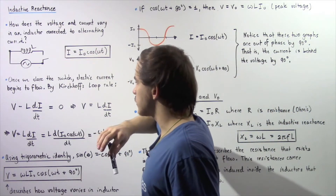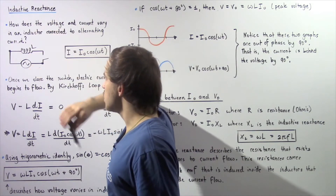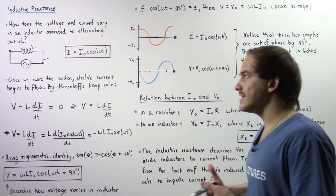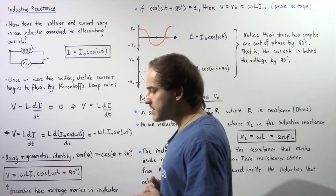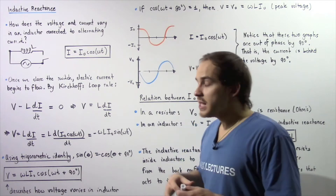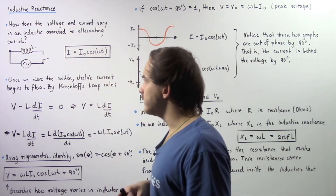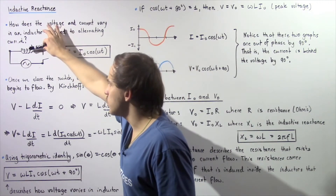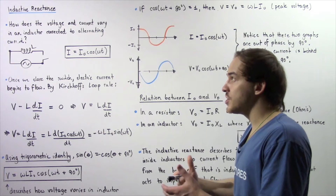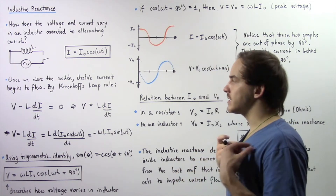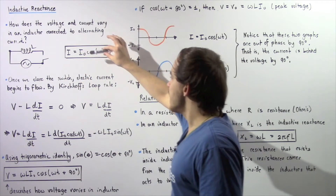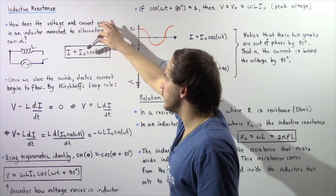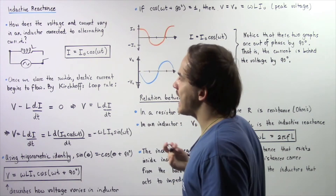Let's suppose we have an electric circuit in which we have an inductance L that is connected to an AC source — a voltage source that creates an alternating electric current. In a previous lecture, we described the electric current that will flow inside our inductor once we close the switch. Electric current will begin to flow through the loops of our inductor, and the equation that describes the electric current at any given moment in time is I = I₀ cos(ωt), where I₀ is the peak electric current and ω is the angular frequency.